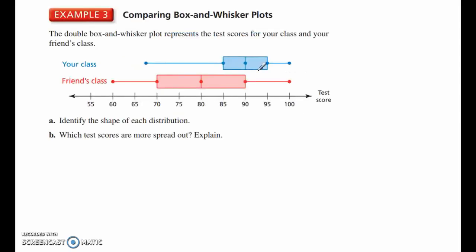All right, so comparing these, here's another example. Identify the shape of each distribution. So, let's look at your class first. These are test scores from your class and your friend's class. So, here we are skewed on the left side. This is skewed on the left side. And your friend's class is symmetric. Which test scores are more spread out? Well, your friend's class has a range from 60 to 100. So, those data values are more spread out.